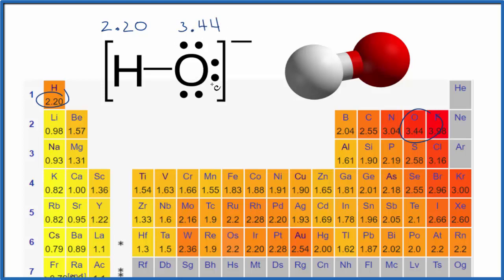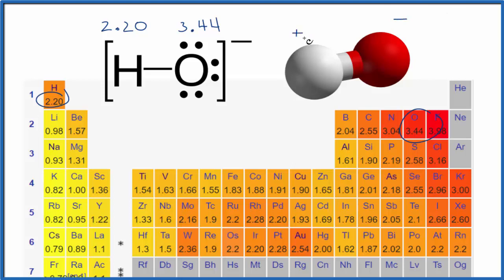So we have a big difference in electronegativity. What that means is the electrons in this bond here — the ones shared between the hydrogen and the oxygen — they're not going to be shared equally. They'll spend more time with the more electronegative element here, which is oxygen. What ends up happening is that gives us a negative charge here on the oxygen — it's more negative. The hydrogen is more positive. So we have poles, and we can say that the hydroxide ion is polar.